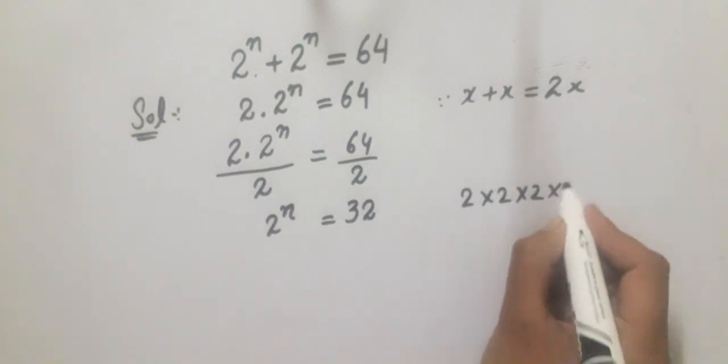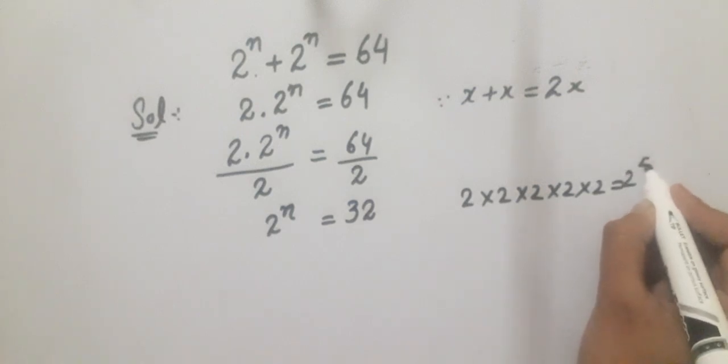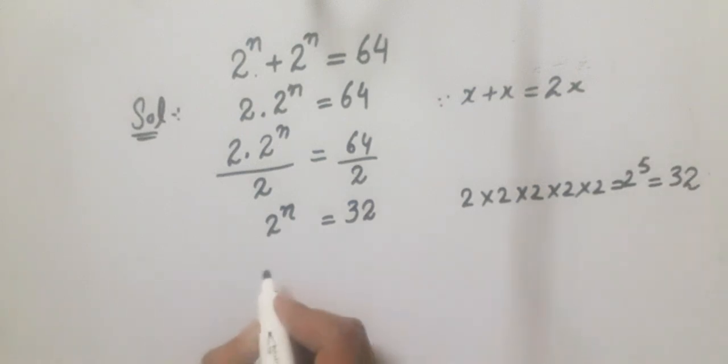Five times, which is equal to 2 raised to power 5, which is equal to 32. So we will write 2 raised to power n equal to 2 raised to power 5.